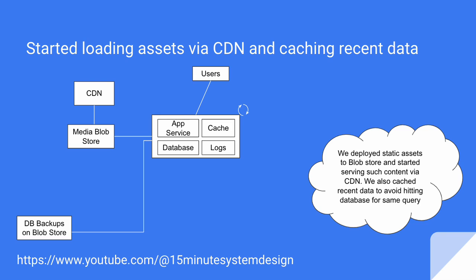To handle the situation, we do two things. First, we start serving website assets like HTML, CSS, and JS from a user-location-specific CDN rather than from our machine. Second, we also start caching recent data in memory to avoid hitting the database for the same query next time.